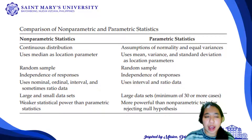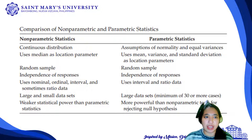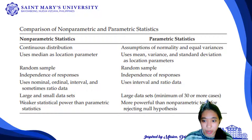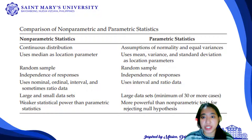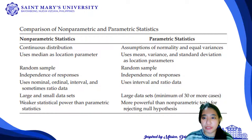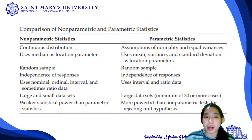Let's have a discussion of a comparison of non-parametric and parametric statistics. For non-parametric tests, as long as the data has a continuous distribution, while for parametric statistics, we need to consider assumptions of normality and equal variances. For parametric statistics, we will be using mean, variance, and standard deviations as location parameters, while if we're going to use non-parametric statistics, then what we need is the median.